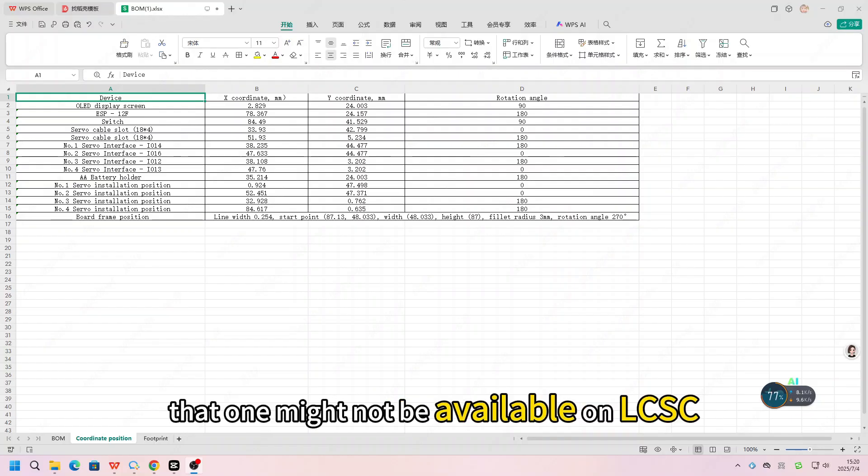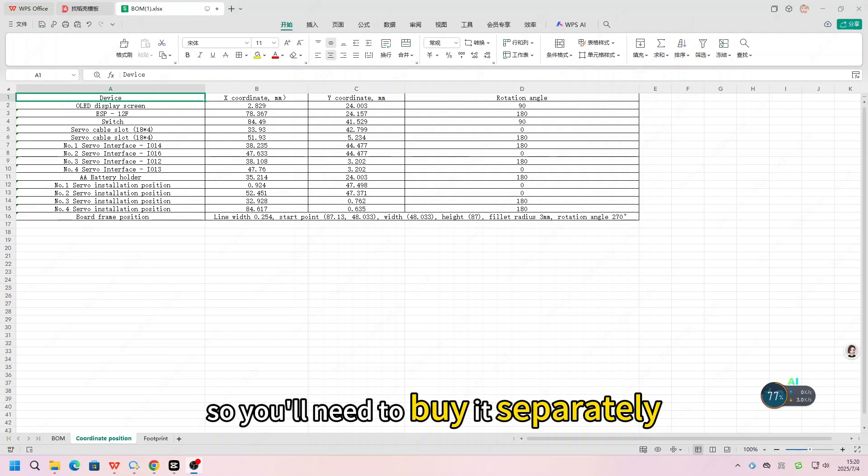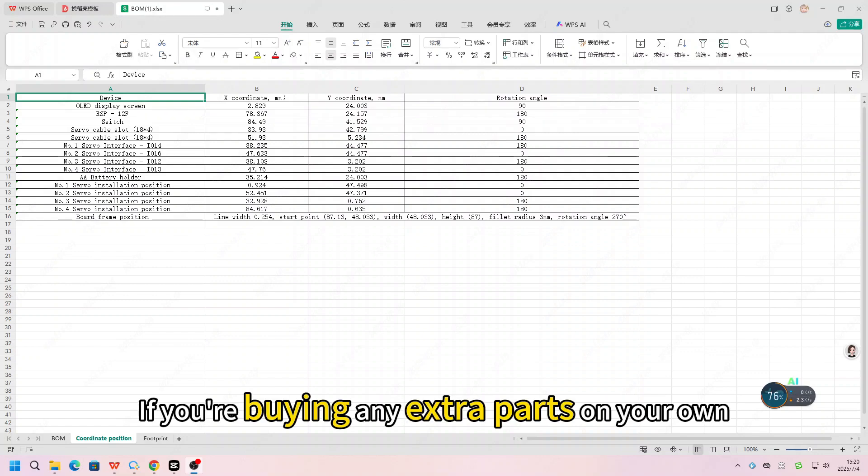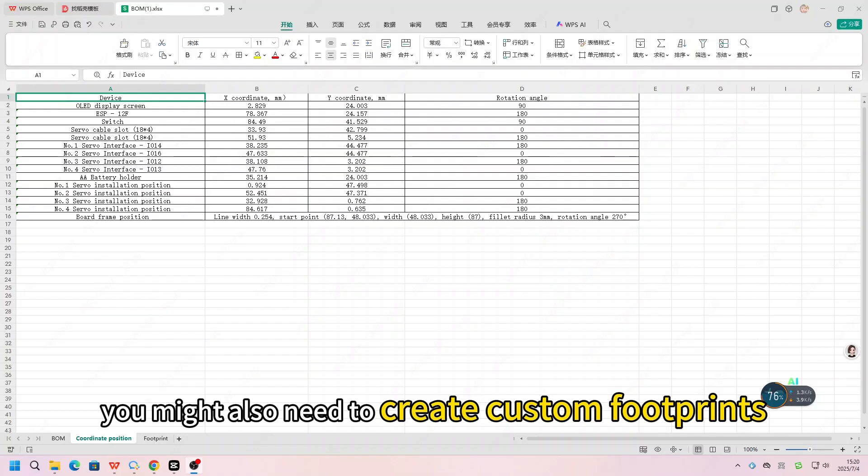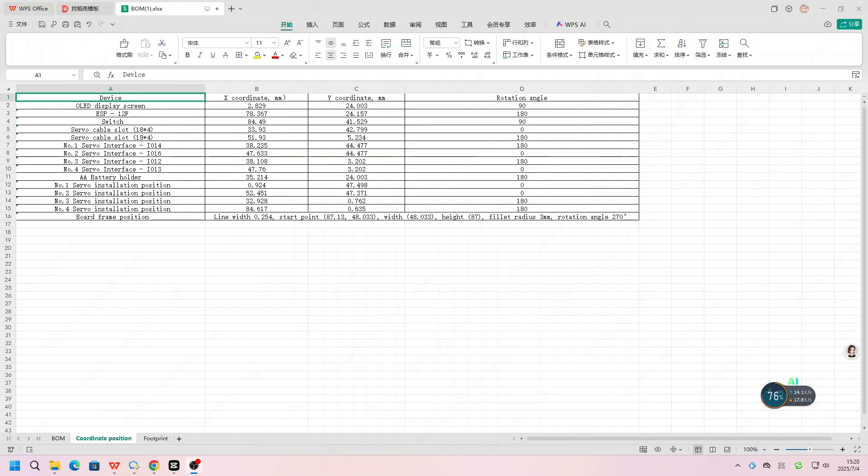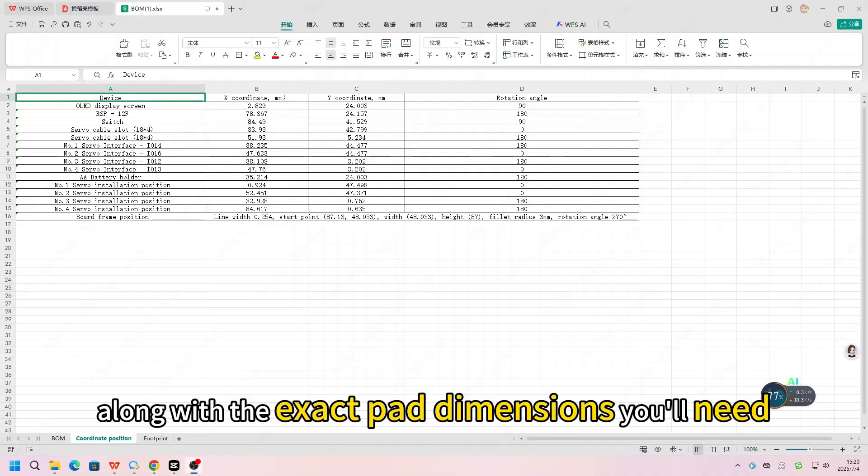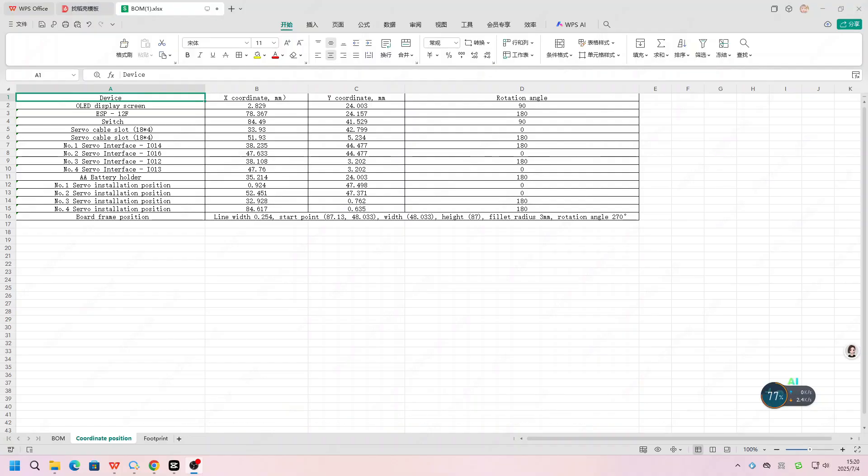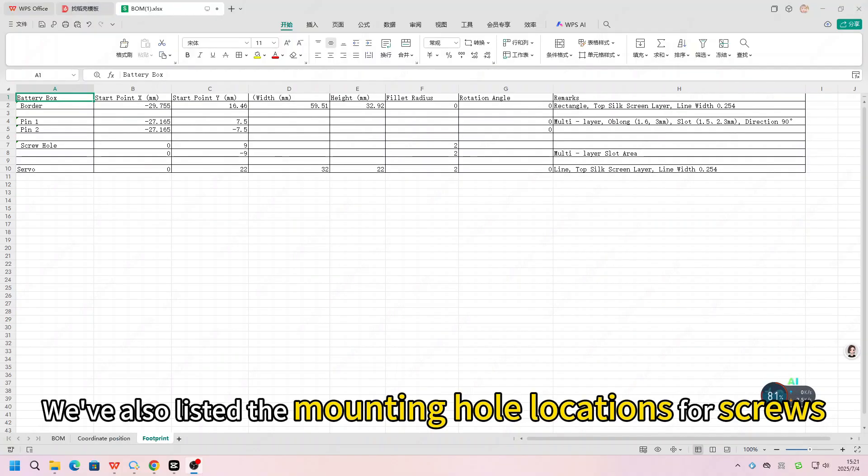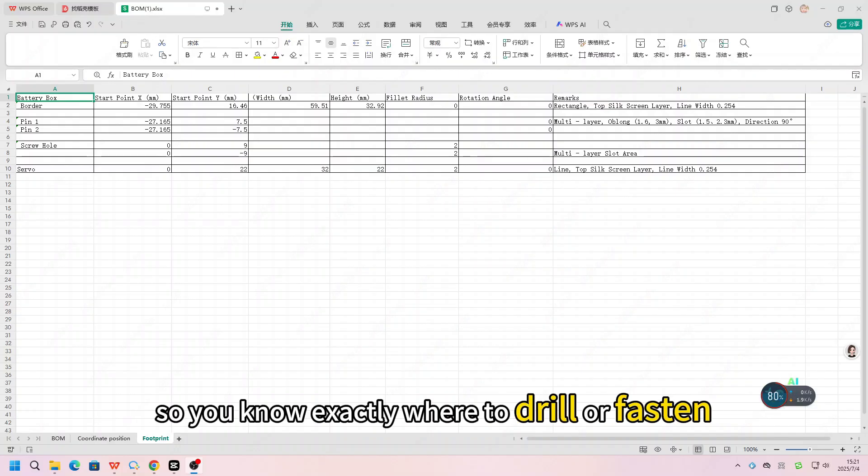As for the battery holder, the one might not be available on LCSC, so you'll need to buy it separately. If you are buying any extra parts on your own, you might also need to create custom footprints. Don't worry, we've included a guide on how to do that, along with the exact pad dimensions you need. We've also listed the mounting hole locations for screws, so you'll know exactly where to drill or fasten.